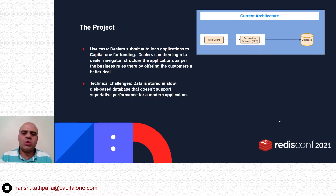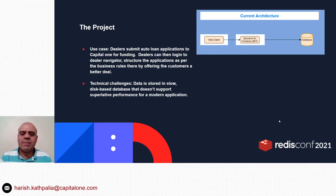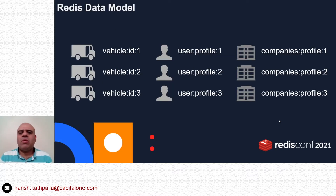This is a web client which talks to a backend-for-frontend (BFF), and the BFF directly talks to the DB layer. The data is stored in a slow disk-based database that doesn't support superlative performance for a modern application. Before we discuss Redis Search and its features, let's review the Redis data model.